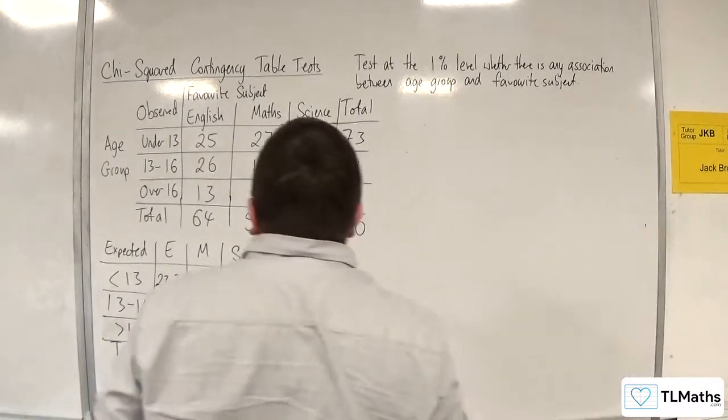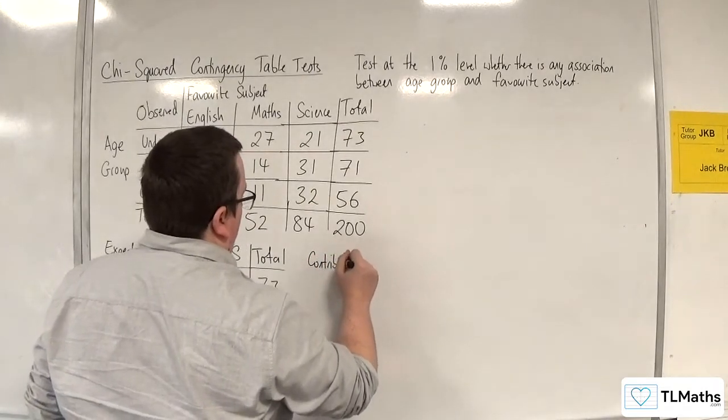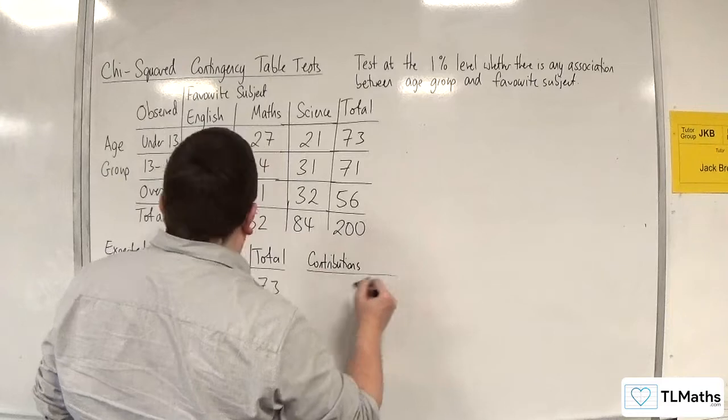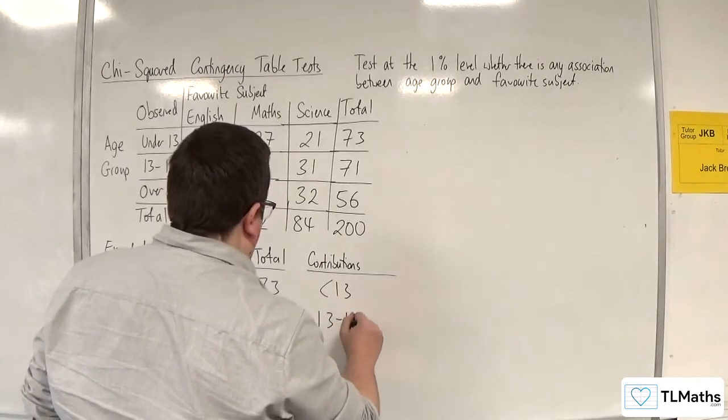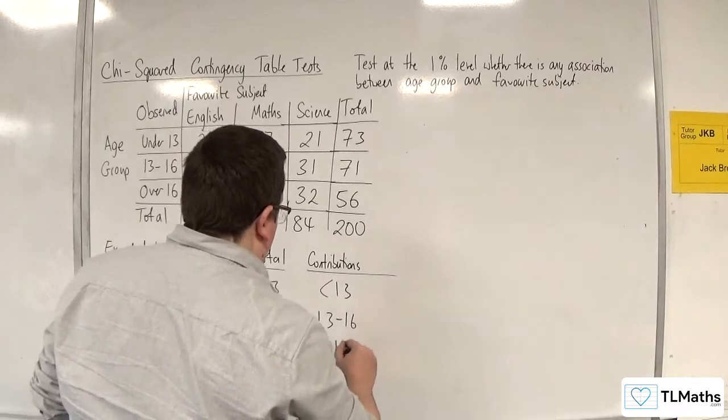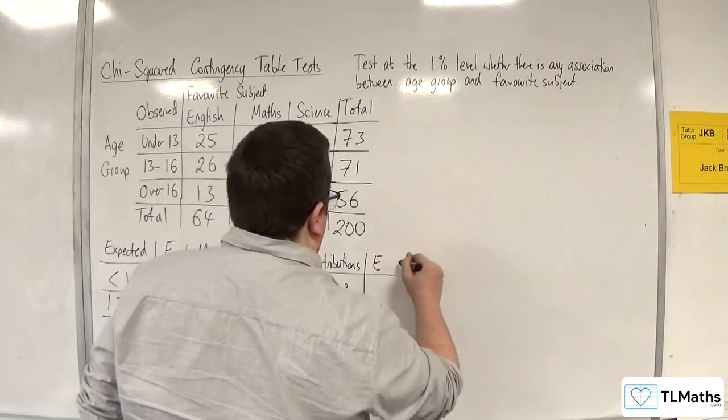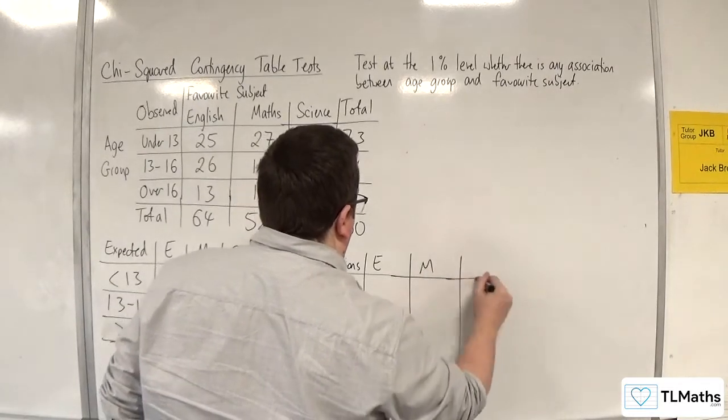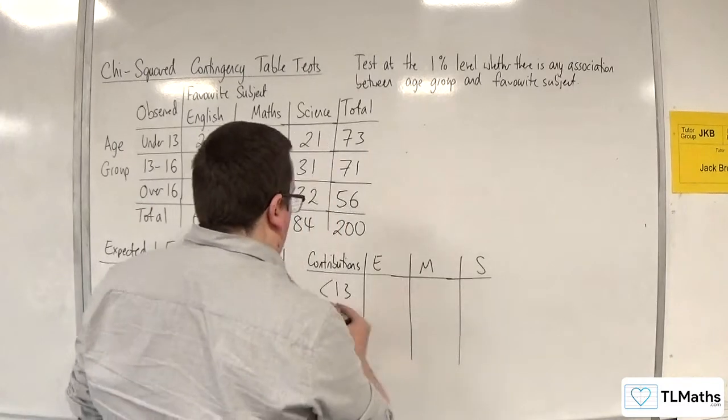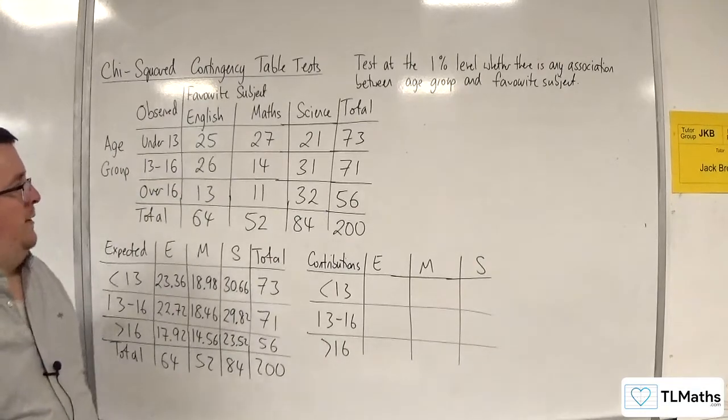I now need the contributions table. Okay. So we're going to need under 13, 13 to 16, and greater than 16. And we're going to have English, Maths, give yourself a bit of space, Science.